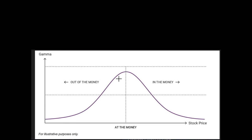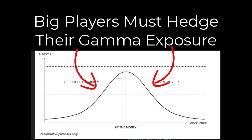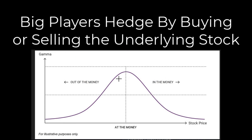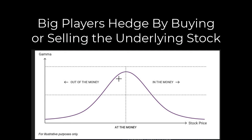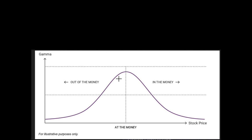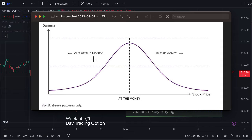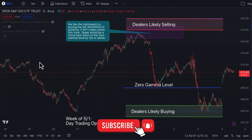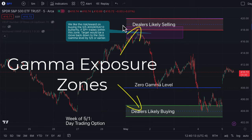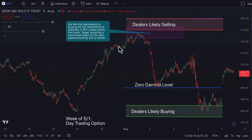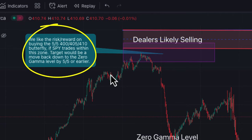Because of the convexity in option prices, option dealers and big institutions — basically anybody who manages a large options portfolio — have to hedge their gamma exposure, because that's where price movement is going to hurt their positions the most. Option dealers and major market participants hedge their options exposure by buying or selling the underlying security. Depending on whether they're long calls, short calls, long puts, or short puts, they'll be either buying or selling the underlying stock to hedge their options position. All of this hedging activity is basically responsible for a lot of short-term directional moves in the underlying stock.